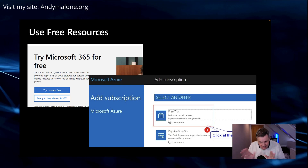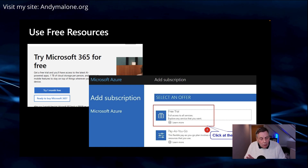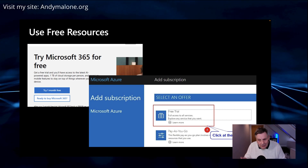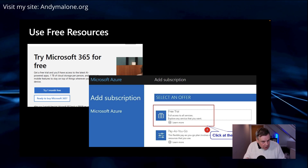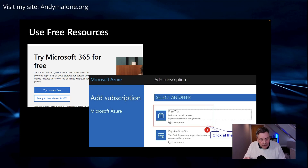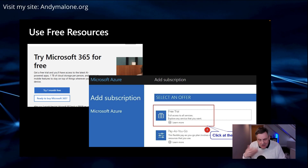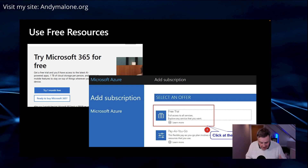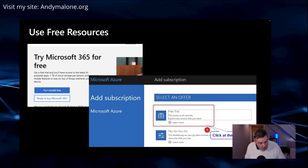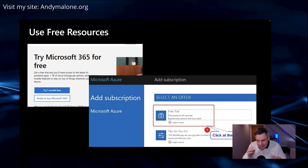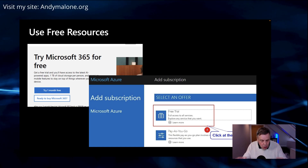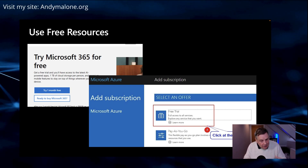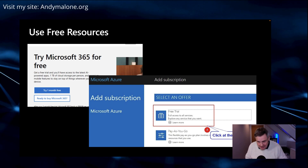A quick tip: you can create multiple email addresses — one trial subscription per email. For example, using Outlook.com, just create a number of different email addresses and you'll get multiple trial subscriptions. That's perfect if you want to create virtual machines, try networking, and if you're going for the AZ series of exams.